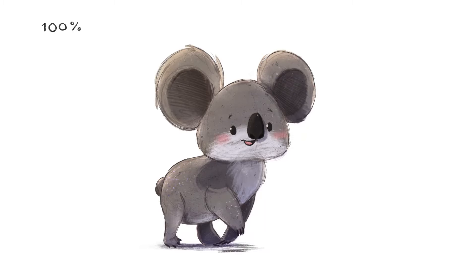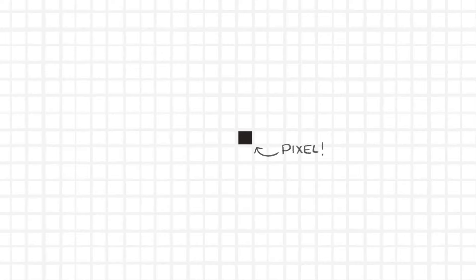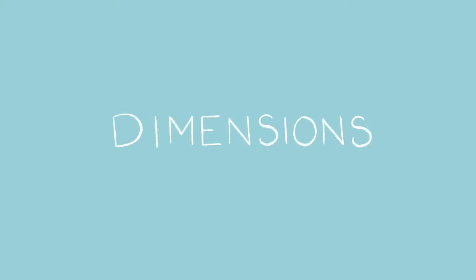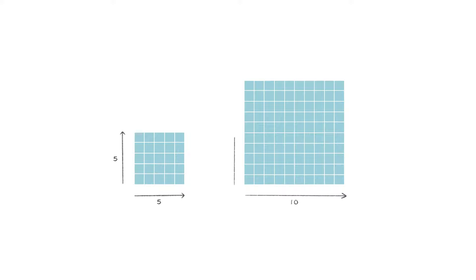So we see images on the screen, but what are they made of? Let's say we take this little koala here and we zoom in quite a lot. We're going to start seeing a bunch of little squares, and those little squares are what we call pixels. So you can think of images as being like a mosaic with tiny tiny tiny pieces. One great thing about these little squares is that we can count them, so the dimensions of an image is really just how many pixels there are in it. For example, here on the left we would have an image that is five by five, and on the right we would have an image that is ten by ten.